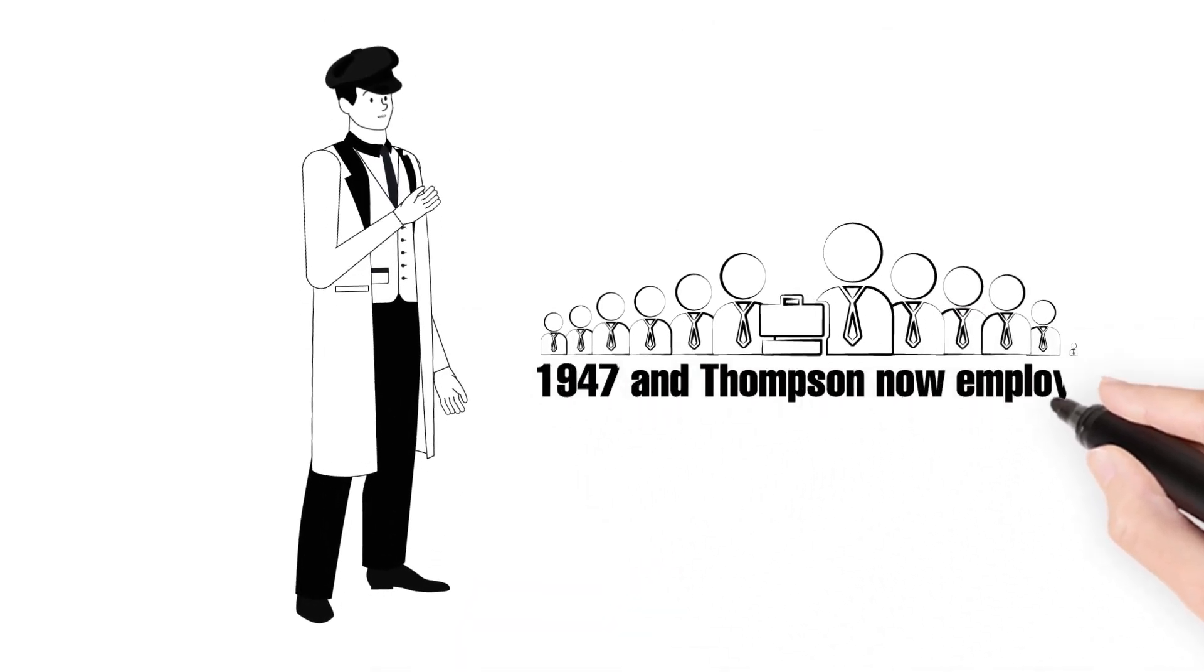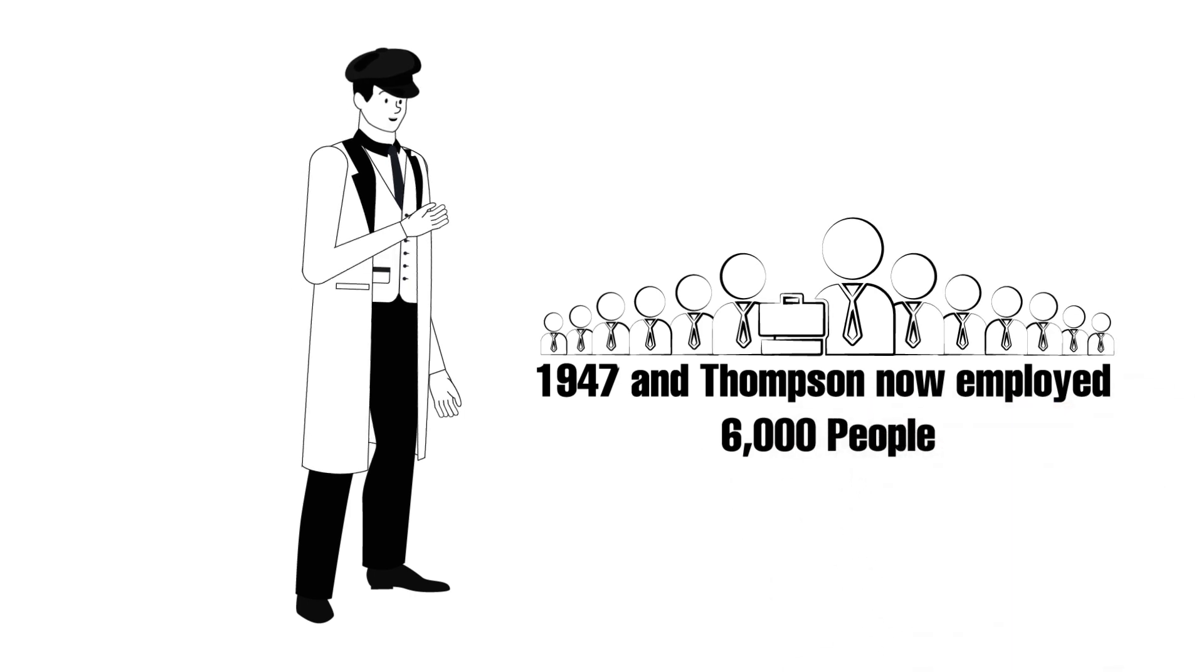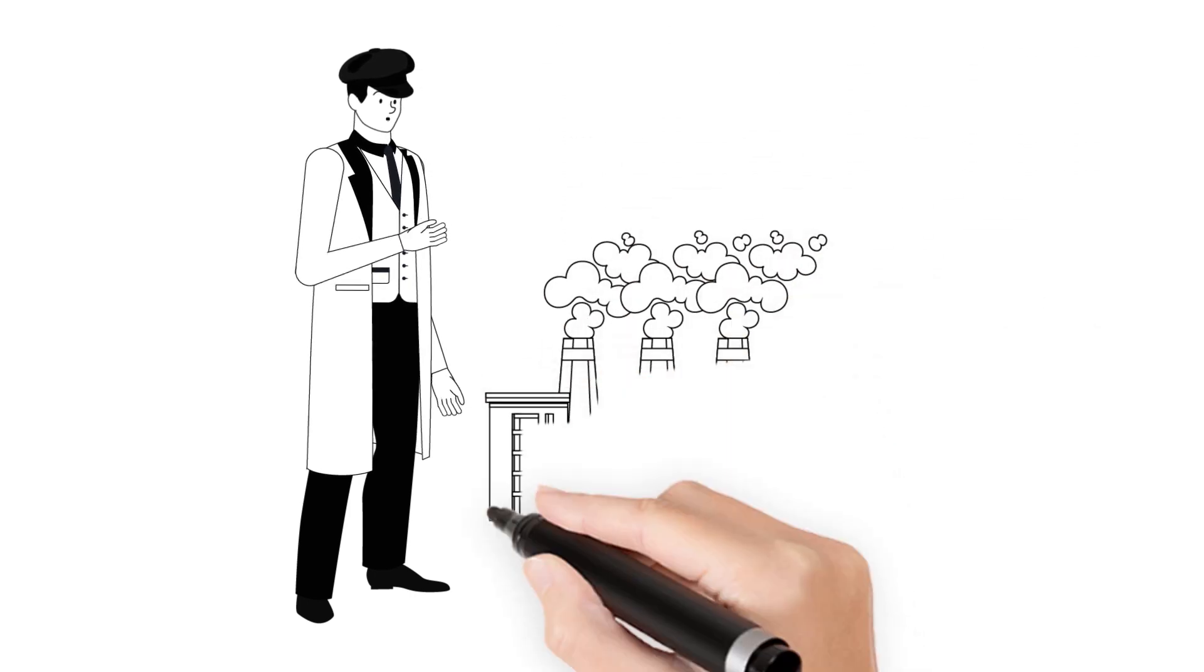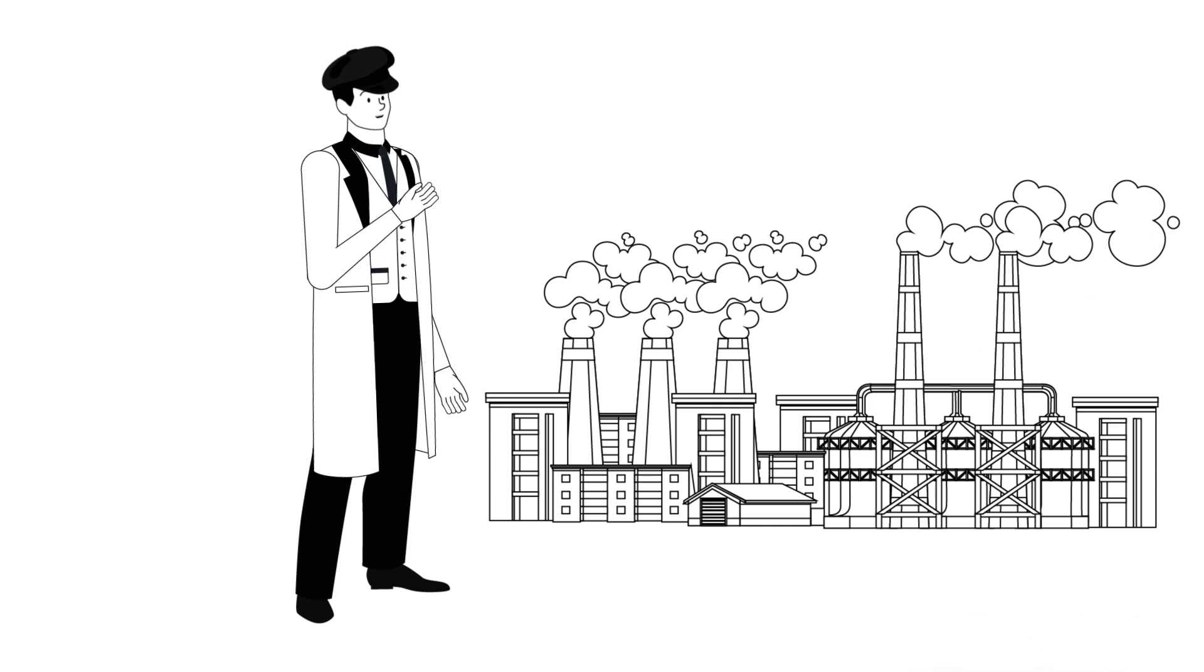1947 and Thomson now employed 6,000 people and it started to expand production into the power generation industry.